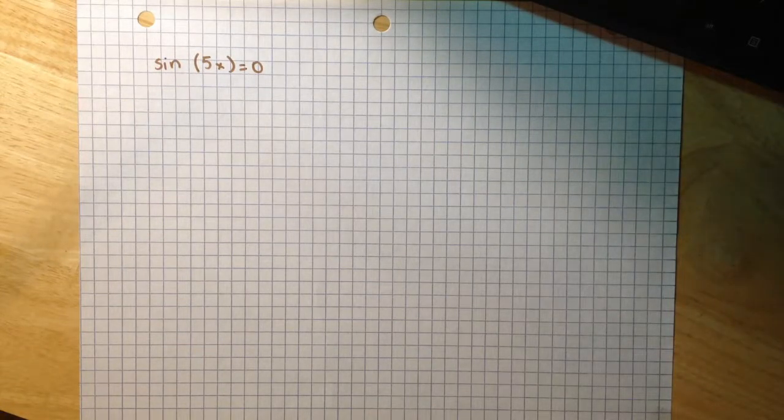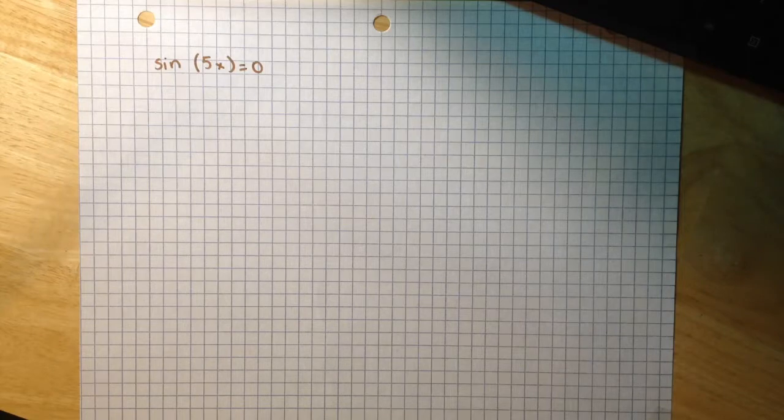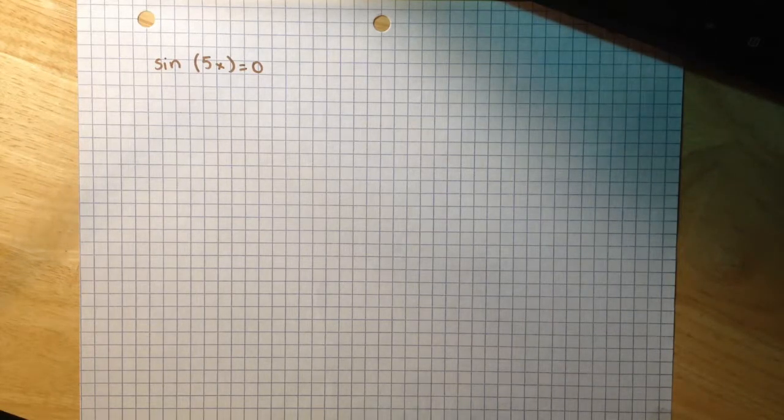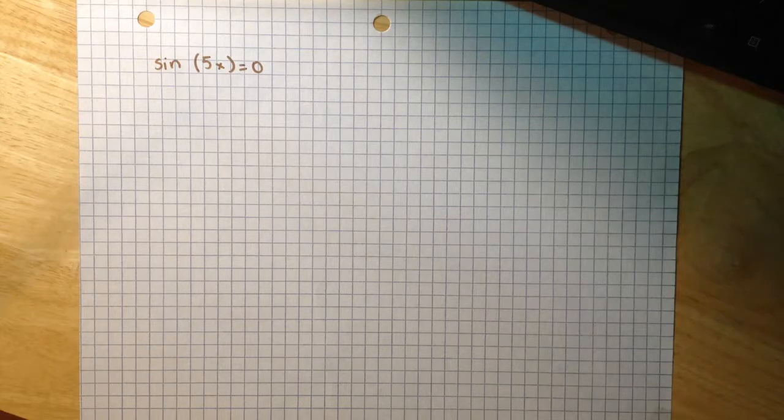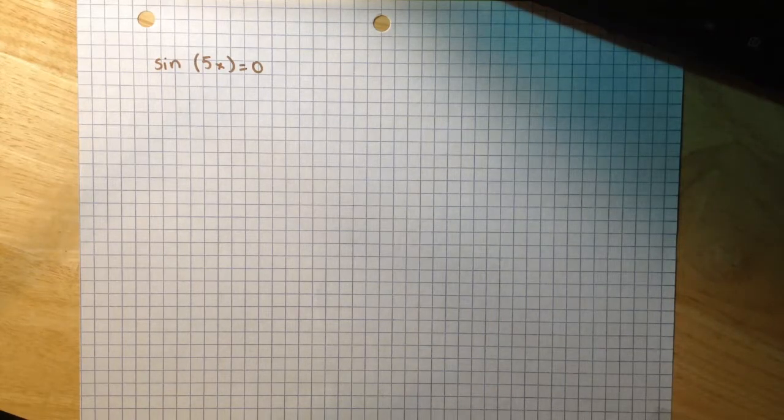We are asked to find all the exact solutions to the following equation, sine of 5x equals 0, and use the parameter k as necessary to represent any integer.